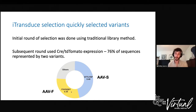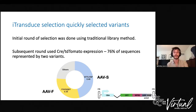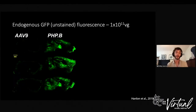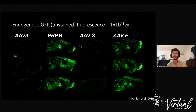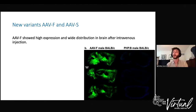We vectorized these new variants, encapsulated a GFP cassette, and tested them intravenously in mice, comparing to AAV9 and PHP.B. AVS, the more popular variant in our screen, didn't improve upon AAV9 in its ability to transduce the brain intravenously. However, AVF really did — we saw very high levels of expression and wide distribution. We checked in multiple mouse strains and there seemed to be no effect of strain on effectiveness.